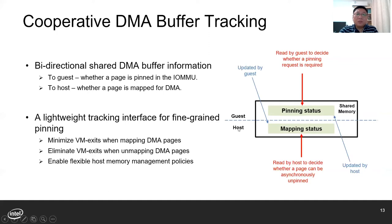The host tells the guest whether a page is pinned in hardware IOMMU, and the guest tells the host whether a page is mapped for DMA. With this information, we can minimize the VM exits when mapping DMA pages — the pinning requests are only needed for guest pages which are not pinned yet. Also, we enable flexible host memory management policies. For example, the host can reclaim any guest pages which are not DMA mapped.